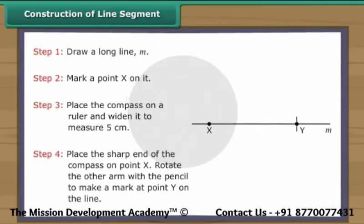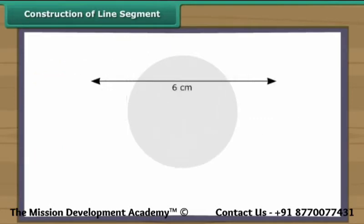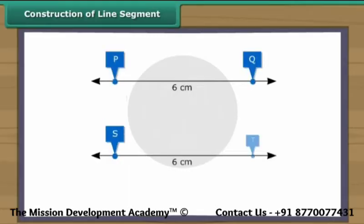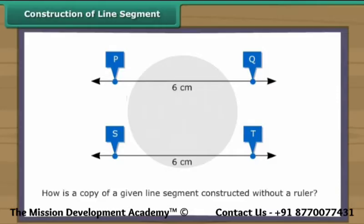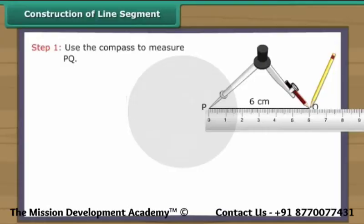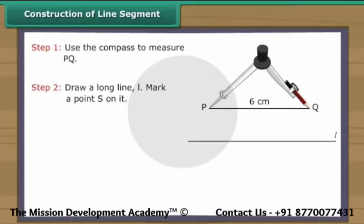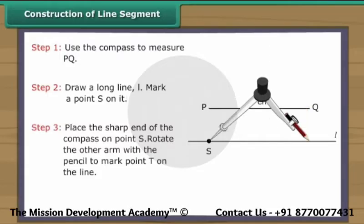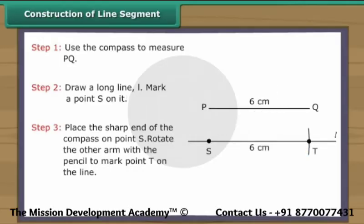Rotate the other arm with the pencil to make a mark at point Y on the same line. We have a line segment XY which is five centimeters long. Suppose a six centimeter long line segment PQ is given. We want to create another line segment ST of the same measurement. How do we do it without using a ruler? Use the compass to measure PQ. Draw a long line L and mark a point S on it. Place the sharp end of the compass on point S. Rotate the other arm to mark point T on the same line. We have a line segment ST which is a copy of line segment PQ.